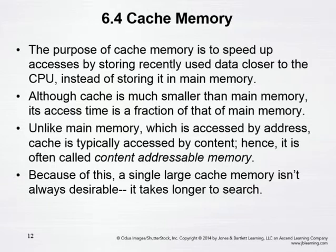Now I want to spend a little time talking about cache memory. The whole purpose of cache memory is to be able to speed up the processing of data by taking data out of RAM and putting it into the cache memory, which is there close to the processor, and so then things going in and out of the registers will be accessed much quicker.